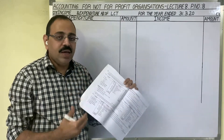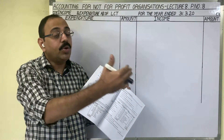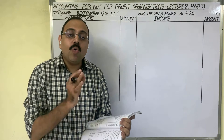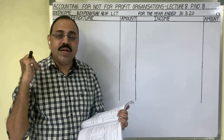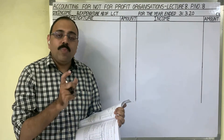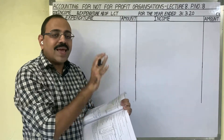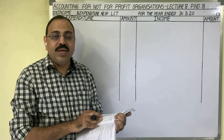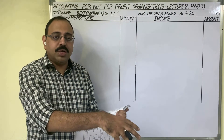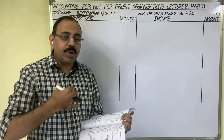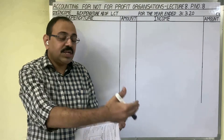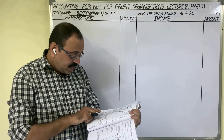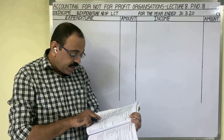Capital receipts are rare incomes; revenue receipts are regular incomes. The first item, opening balance 20,450, is the opening cash balance — previous year's closing cash balance. Cash is an asset, so we do not show it in the income and expenditure account. Next, subscriptions 21,250: members pay subscriptions regularly to continue their membership, so it is a regular revenue income shown on the credit side. The note says it includes 750 for 2018-19.